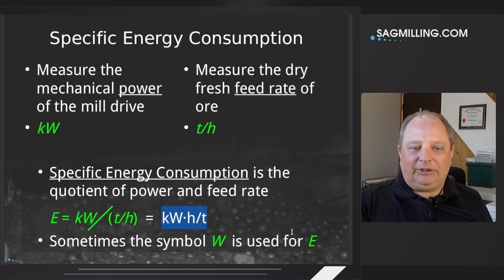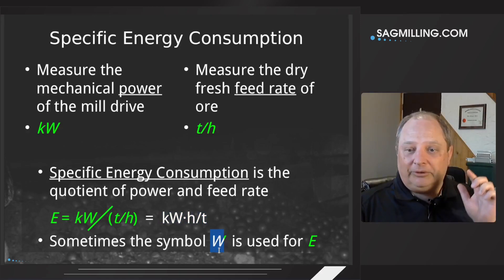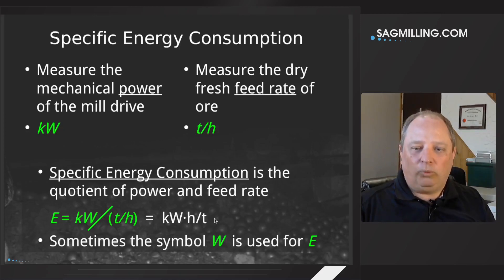I'm using the convention that E represents the specific energy, but you will also see a convention in some other works that W is used for specific energy consumption. And the reason for that is that the units of kilowatt hours per ton also works for thermodynamic work. We'll be talking in a bit about Fred Bond and his models. He used the convention of W rather than E.